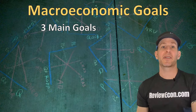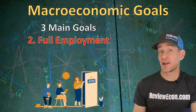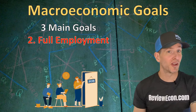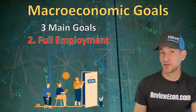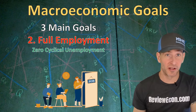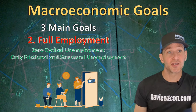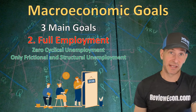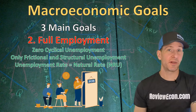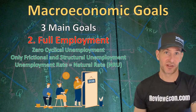The second macroeconomic goal is full employment. As you learned in a previous video, full employment doesn't mean we have 0% unemployment — it means we have zero cyclical unemployment. We are still going to have some frictional and structural unemployment. As a result, the unemployment rate will be equal to the natural rate of unemployment.